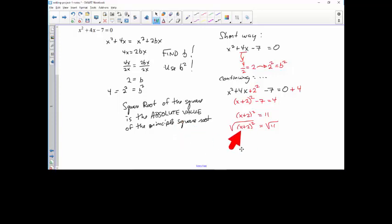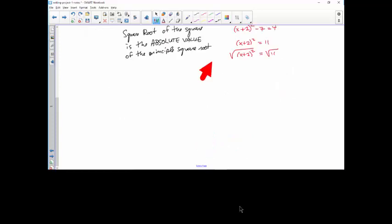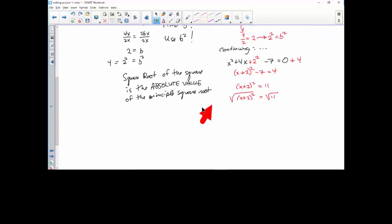The square root of the square is the absolute value of the principal square root. Now, this statement is certainly true. And I usually skip that step after I've done my first 100 and I've done my first 10,000. But anyway, the square root of this thing is the absolute value of the x plus 2. The square root of quantity x plus 2 quantity squared is the absolute value of the quantity x plus 2.